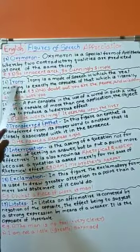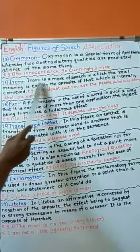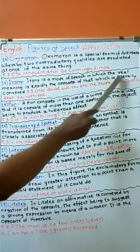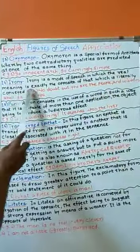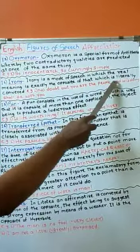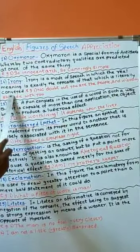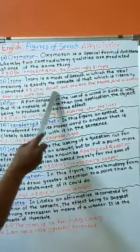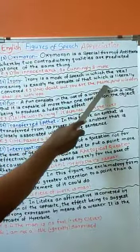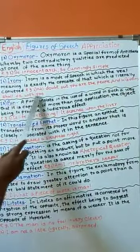Let's see 14th type, Irony. Irony is a mode of speech in which the real meaning is exactly the opposite of that which is literally conveyed. For example, no doubt but you are the people and wisdom shall die with you.